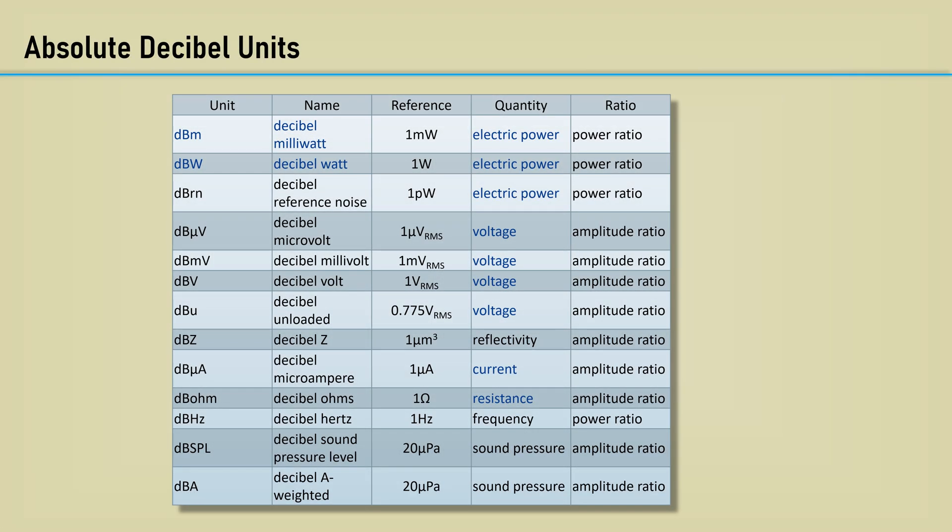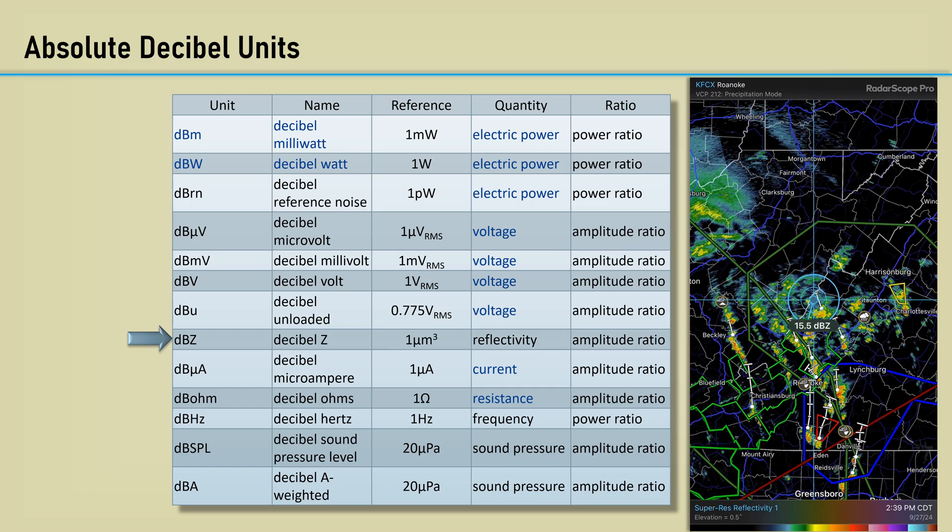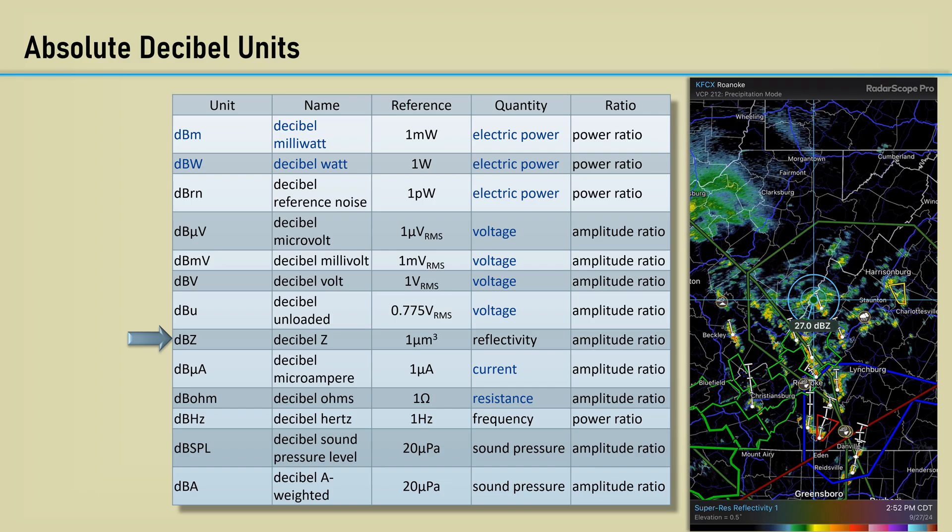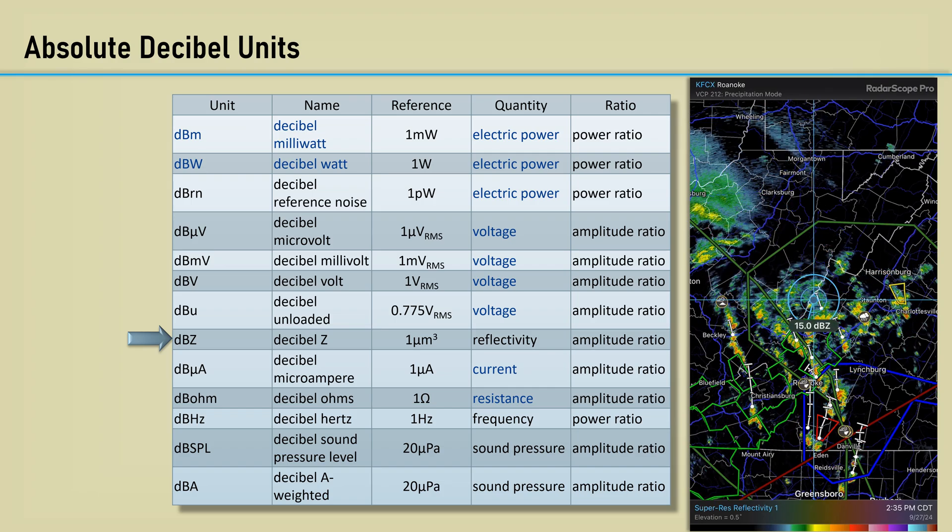Here is a chart I found for various absolute decibel usage and their associated references. One interesting one is dBZ, which is the reflectivity of the return of a weather radar. Here's an example of storms moving across a region with the reflectivity displayed in dBZ.